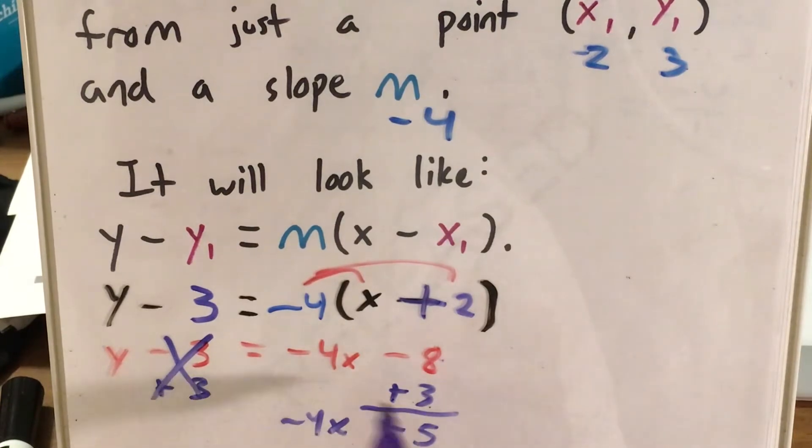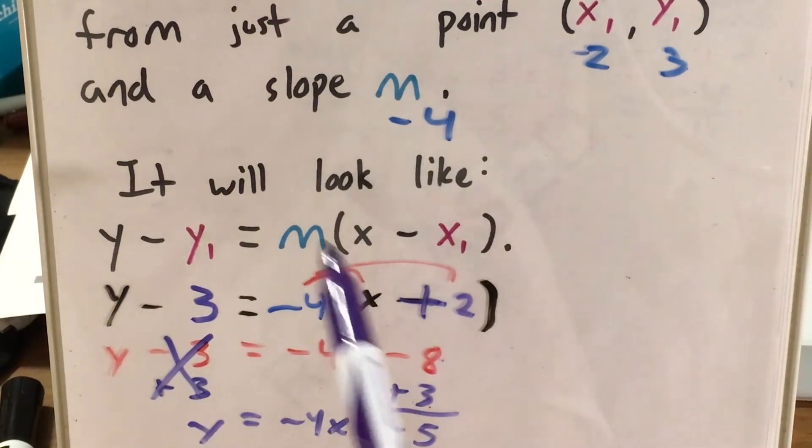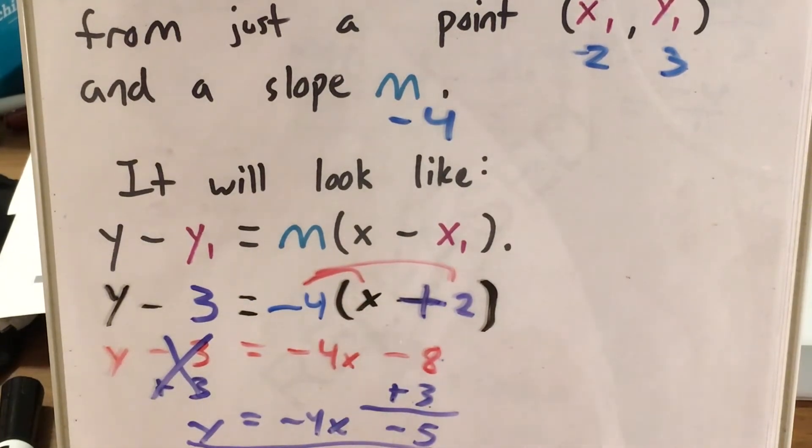That's still money I owe, so it's negative. After working through this point-slope form, we end up with y = -4x - 5.